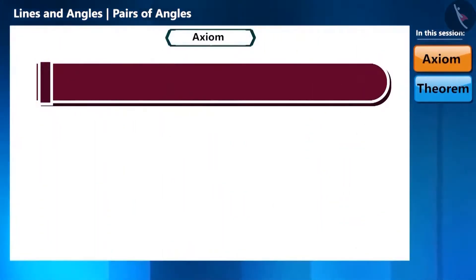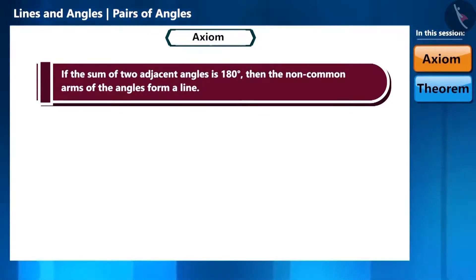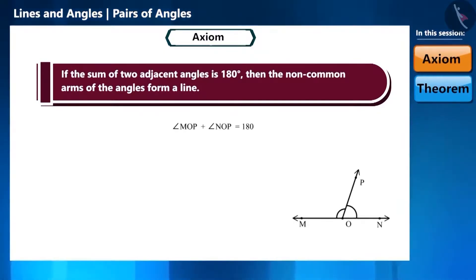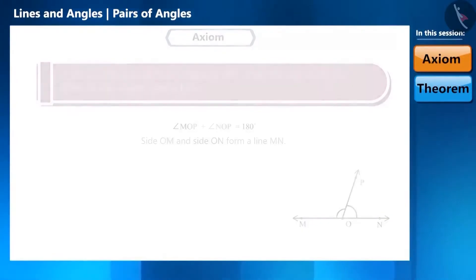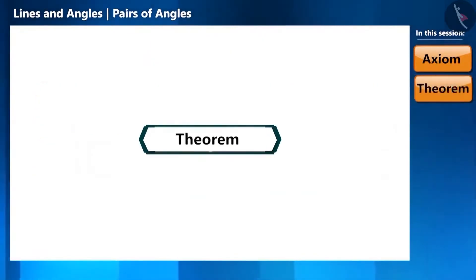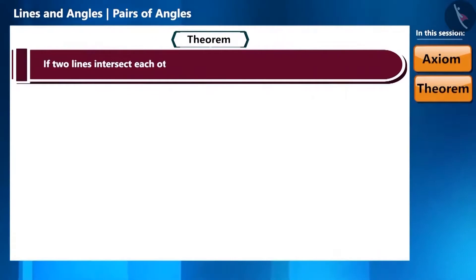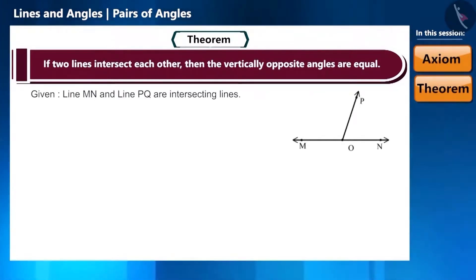These two axioms together are called the linear pair axiom. Now we move to the next theorem: if two lines intersect each other, the vertically opposite angles are equal. Let's convert ray OP into a line in the figure. We need to prove that angle MOP equals angle QON, and angle NOP equals angle MOQ.